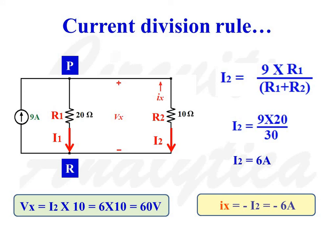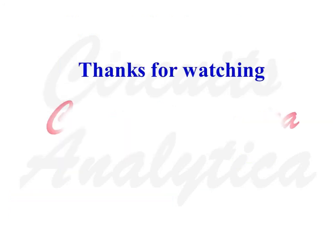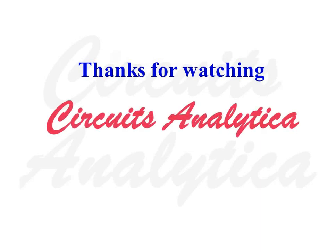So I2 is equal to 6 amperes, and since Ix equals minus I2, we get Ix equal to minus 6 amperes. Vx equals I2 times R2, so Vx equals I2 times 10 ohms, giving Vx equal to 60 volts. Thanks for watching Circuits Analytica — enjoy learning.